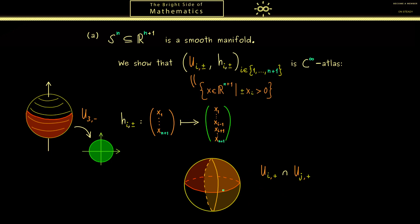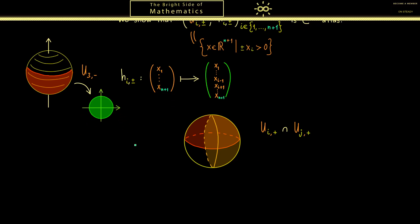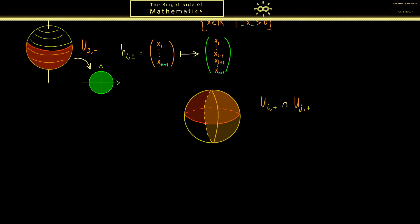However, now please don't forget we are interested in the transition maps. Or to say it in other words, we have to look what happens here at the pink level. Therefore we have to apply the maps h_{i,+} and h_{j,+}. Now you should see in R^3, both map the corresponding hemisphere to a disk. However, now the question is what happens to our intersection here.